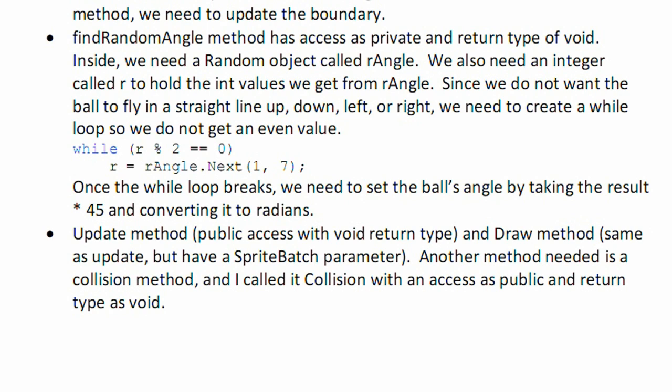We want to get a value that is not even, because we're going to multiply the random number times 45. And that will give us a nice little diagonal. Because 0 times 45 is 0. 2 times 45 is 90. 4 times 45 is 180. And 6 times 45 is 270.